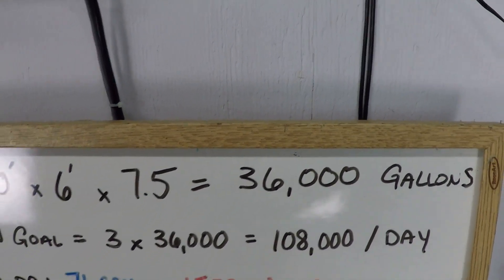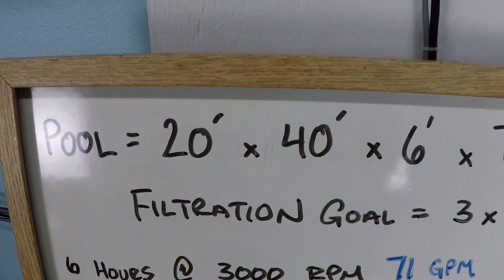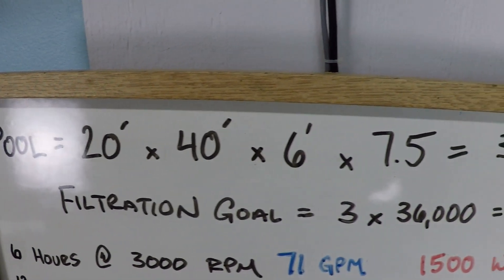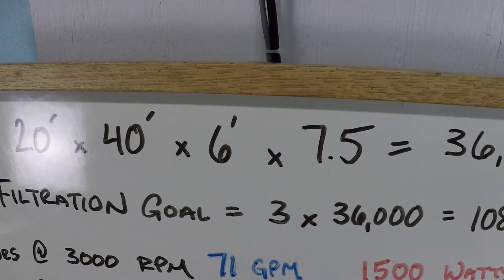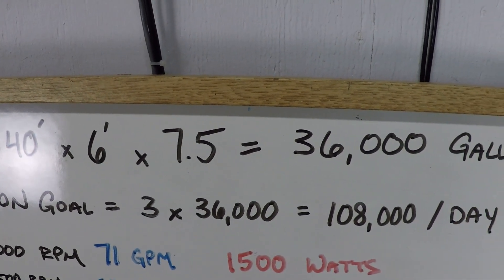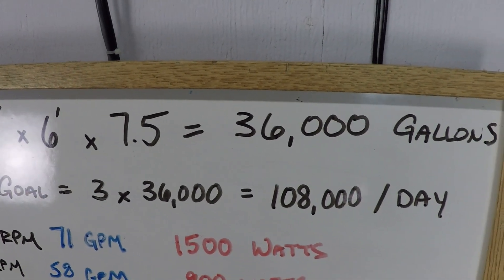36,000 gallons. That's a lot of water, and if you follow these other videos that I make you'll already know that the filtration goal that I recommend you should follow is three times the volume of your pool filtered every day, because that will achieve 95% of all of the water in your pool being filtered at least one time.